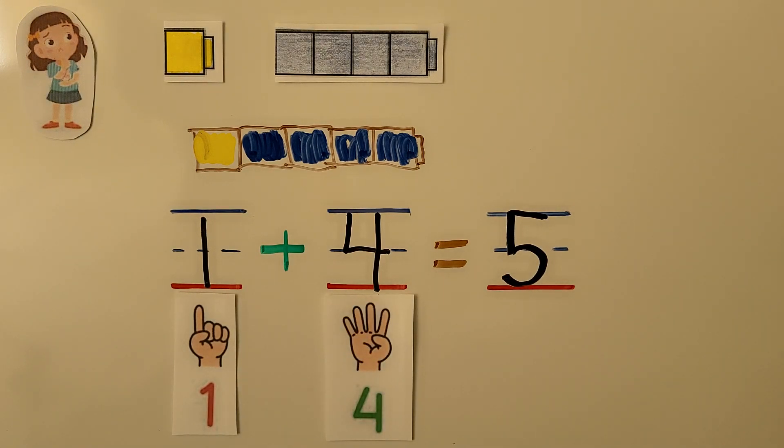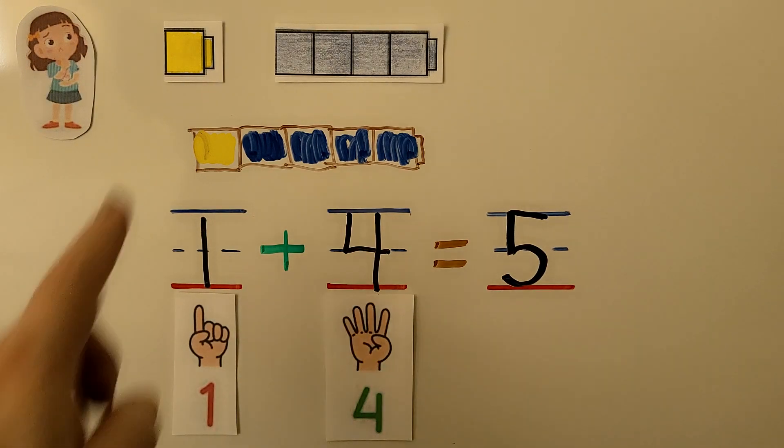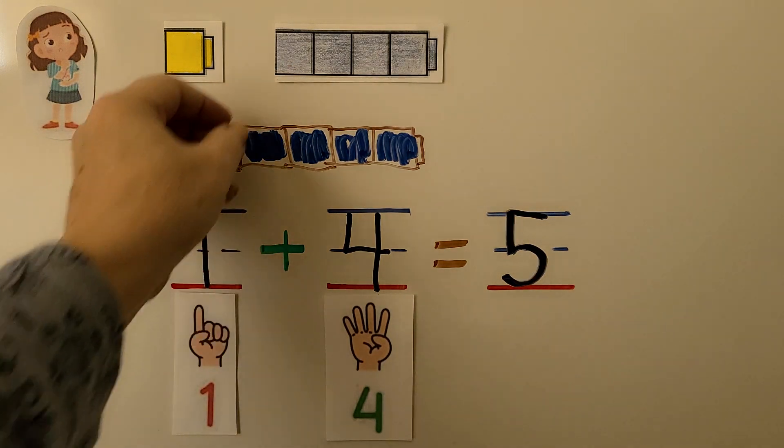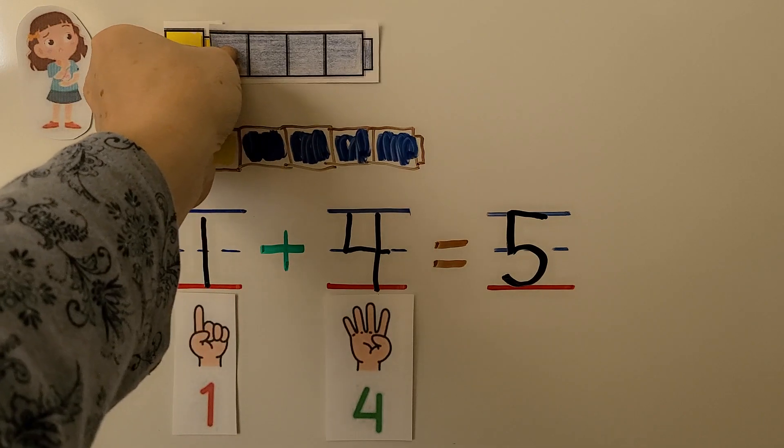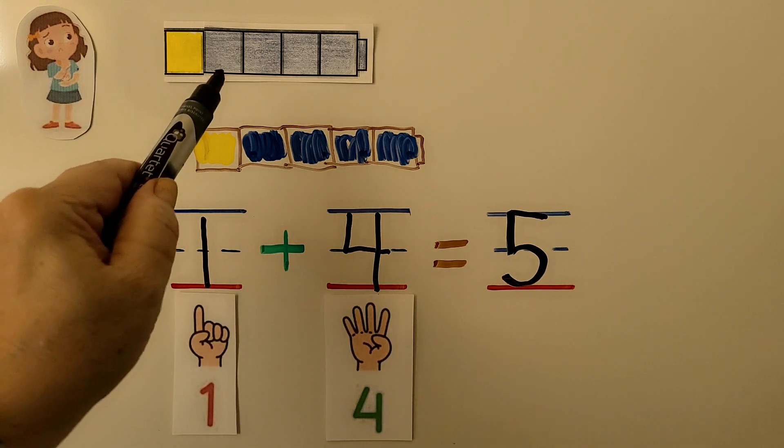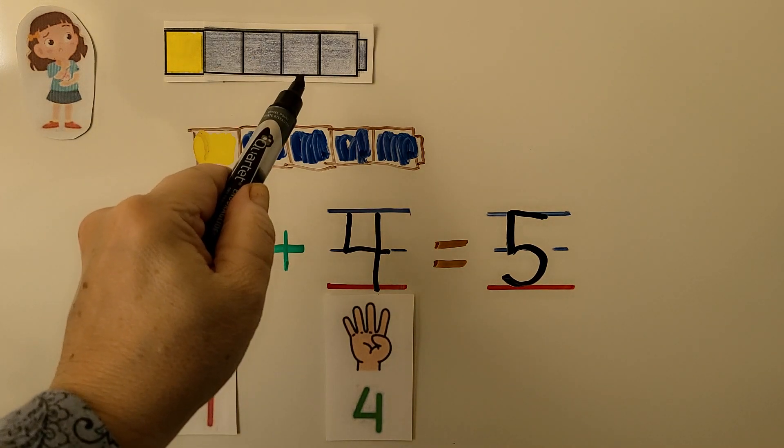So Emma has five cubes. If we put this one yellow cube together with the four blue cubes, we'll make one long cube train of five cubes. One, two, three, four, five.